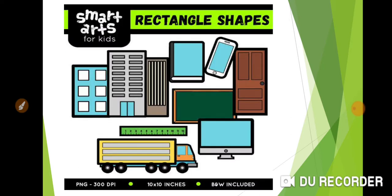Here we can see different types of rectangle shaped things in our surroundings like door, mobile phone, book, blackboard, TV, scale, etc. Now let's see the next figure.